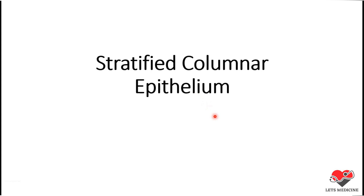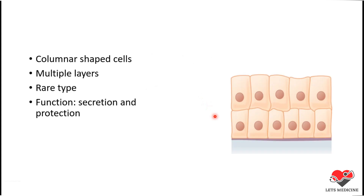Today we are going to discuss the topic of stratified columnar epithelium. Stratified columnar epithelium is a multiple-layered structure — an epithelium made up of more than one layer. The cells present in stratified columnar epithelium are columnar in shape, meaning the height of these cells is more than their width, and they are arranged in multiple layers. Just like stratified cuboidal epithelium, stratified columnar is also a rare type of epithelium.